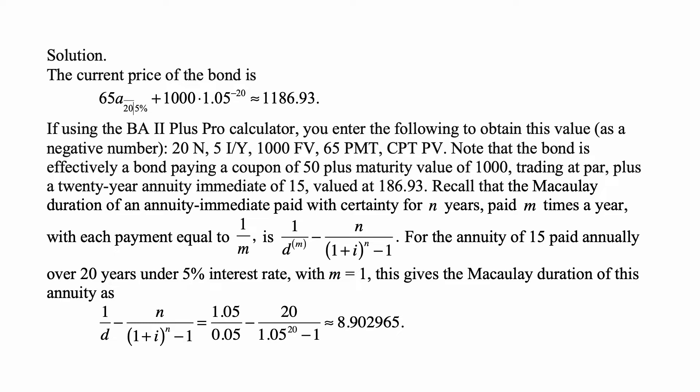Its coupon is higher than the current market yield interest rate of 5%. The coupon is 6.5%. If using the BA II Plus Pro calculator, you enter the following to obtain this value, and the value comes out as a negative number: 20 for N, 5 for I/Y, 1,000 for future value, 65 for payment, and compute present value.